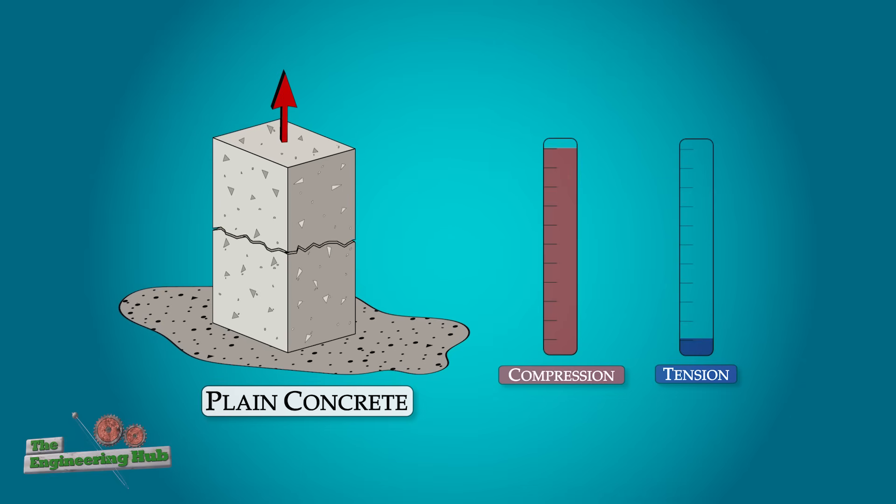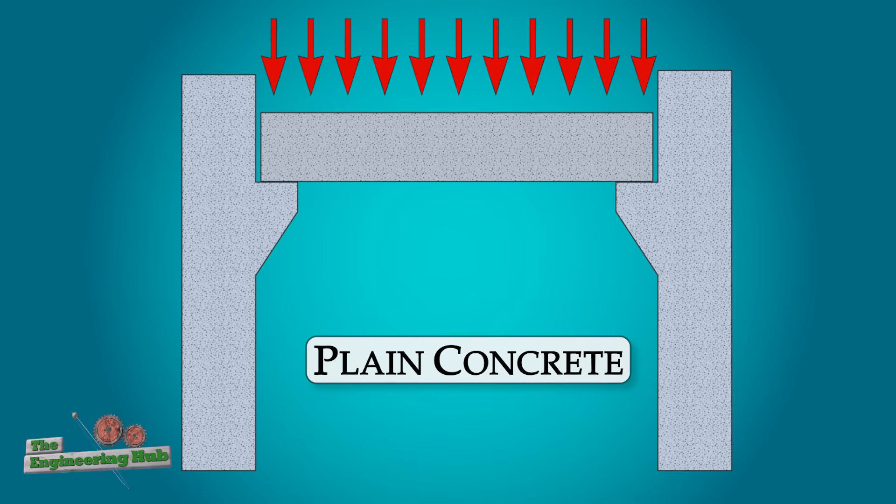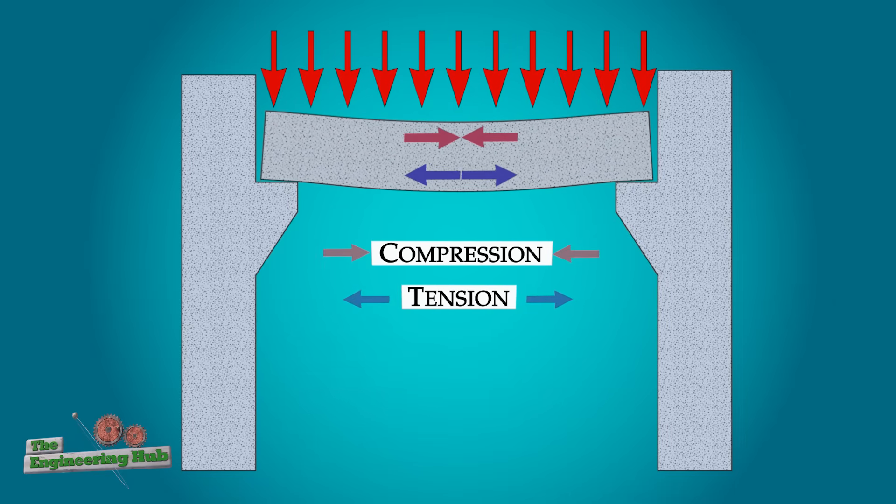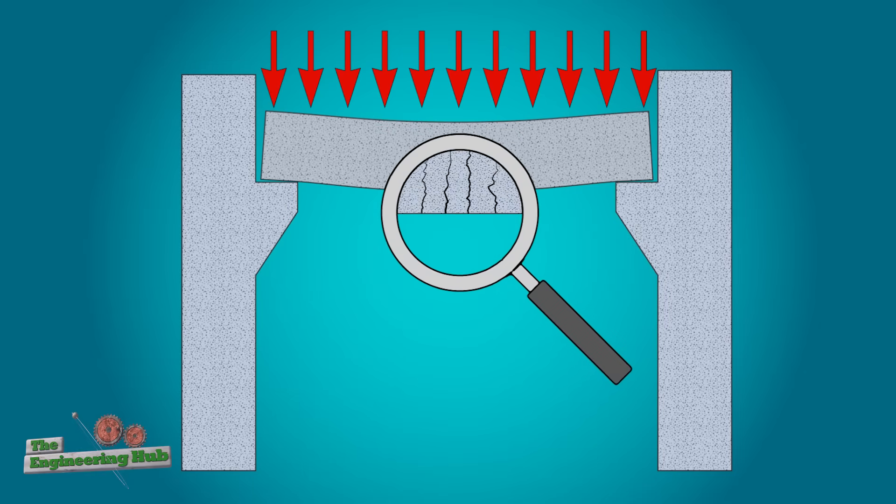Concrete is very strong in compression but only one-tenth as strong in tension. So if we make a beam of pure concrete and apply a bending load, the top half gets compressed while the bottom half is in tension. This tension zone in the bottom half will form cracks that propagate until the whole beam fails.